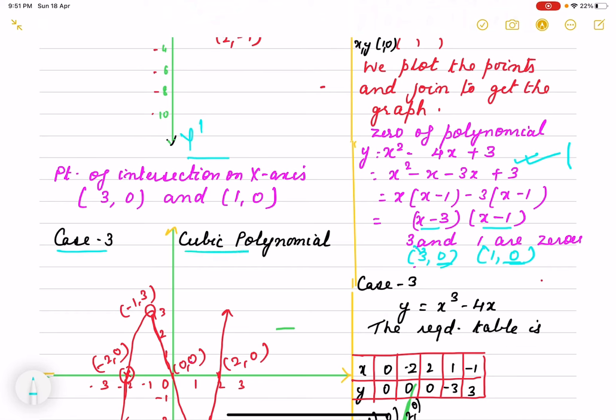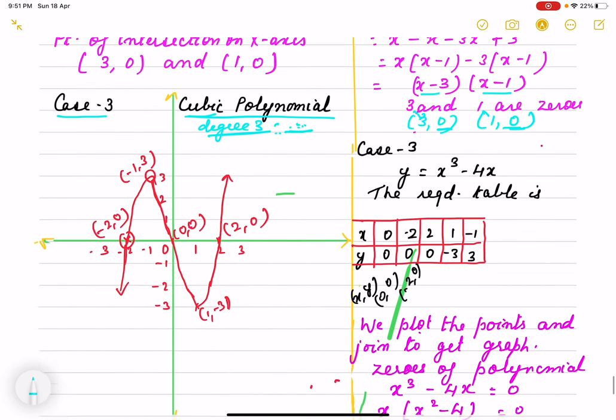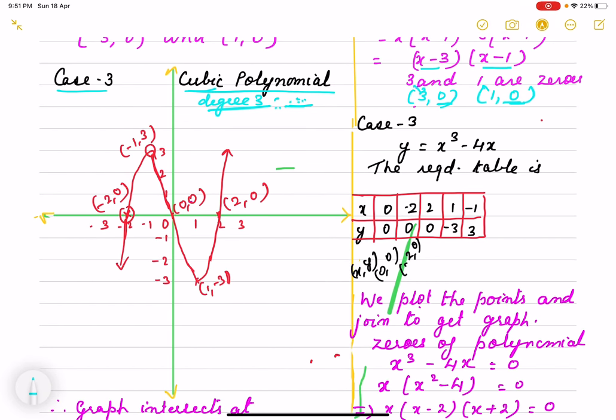Third case is cubic polynomial. Cubic means degree 3. So it has at most 3 zeros. It can have less than 3 also because maybe some roots are coincident, you will get the same root.